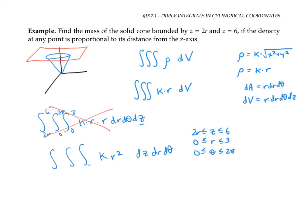Now z goes between 2r and six, r goes between zero and three, and theta goes between zero and 2π.